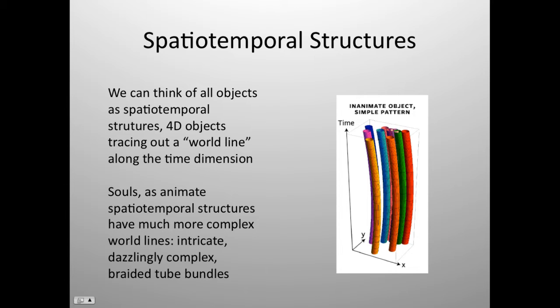their spatiotemporal structures would basically be like tubes. If there's no change to their internal composition, all the particles that make them up are just going to be staying in the same place. They're still moving through time, so there's a kind of a line in temporal dimension, but other than that, there's no change along the other axes of the spatial dimensions. Animate objects, on the other hand, so living things, souls, I mean, they're going to have crazy complex structures. They're just going to be dizzyingly complex.